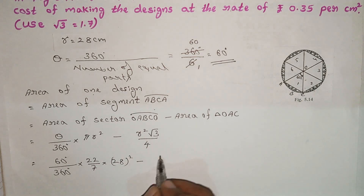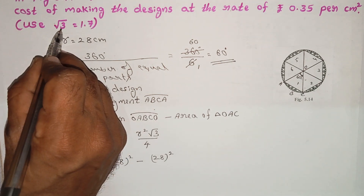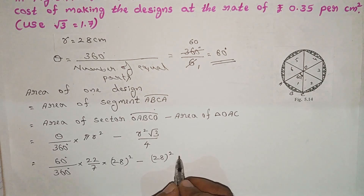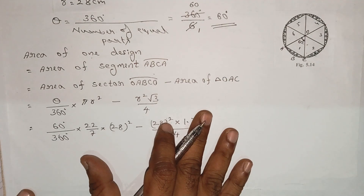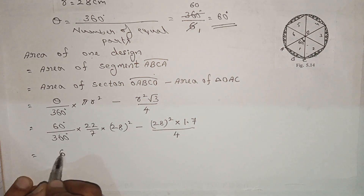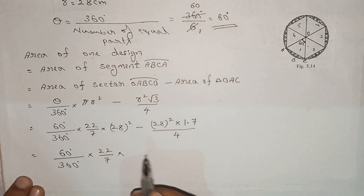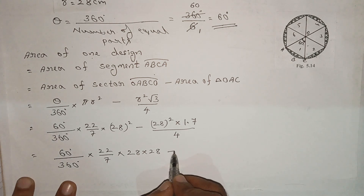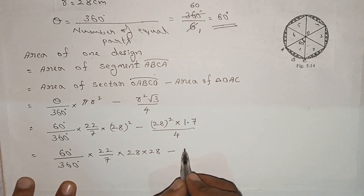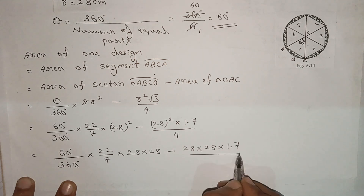The radius R is 28. Substituting: area of one design equals R²√3 — that is 28 × 28 minus 28 × 28 × 1.7 divided by 4.